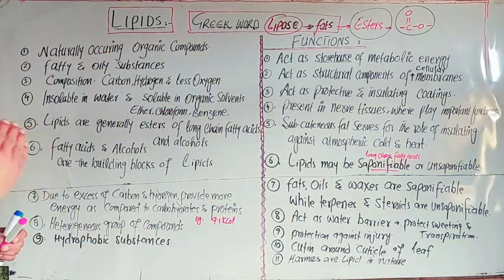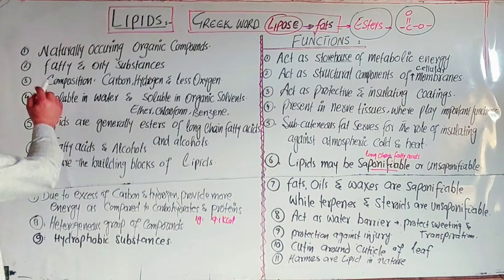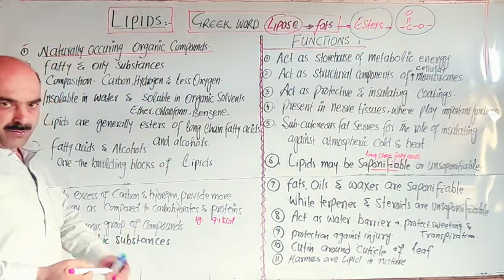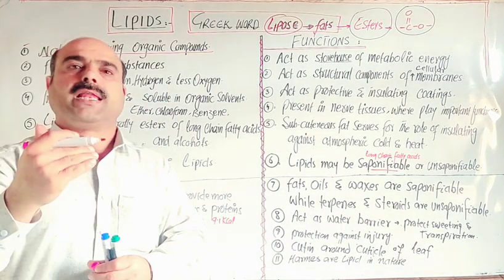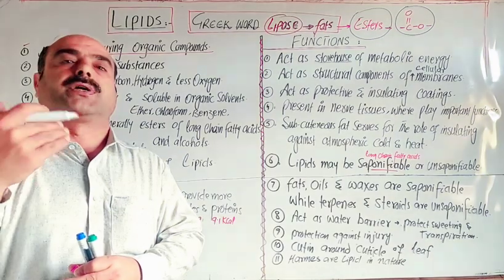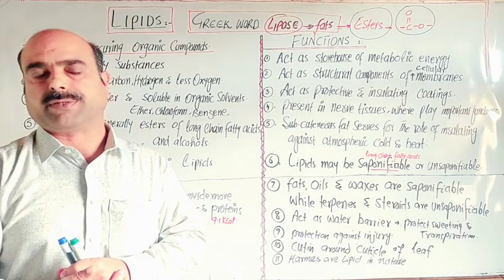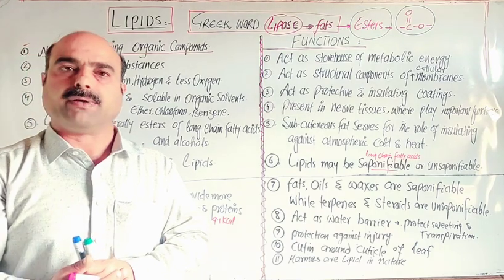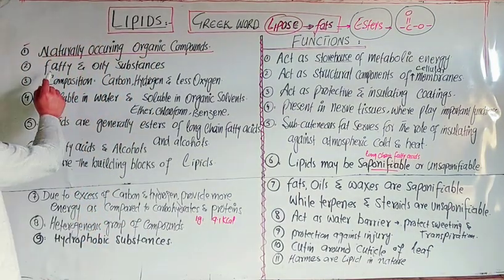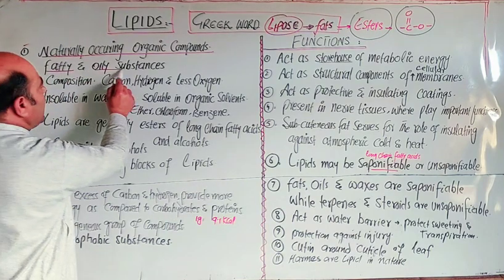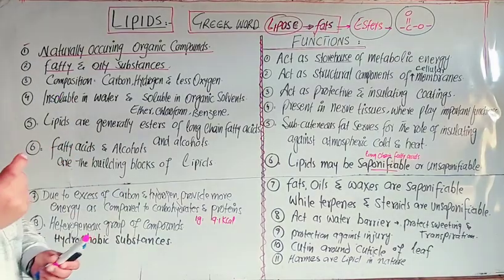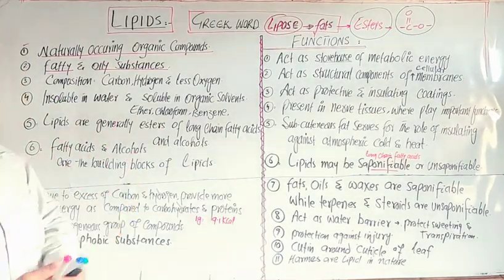The general introduction: first, lipids are naturally occurring organic compounds. Organic compounds must contain carbon and hydrogen elements. They are naturally occurring in plants, in animals, and in microorganisms. Second, these are fatty and oily substances.